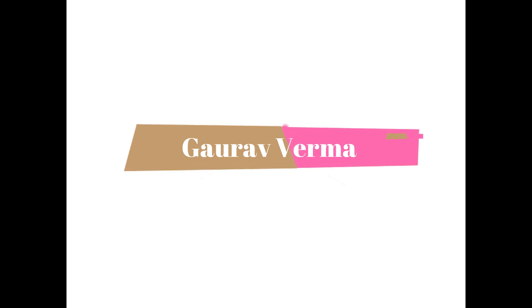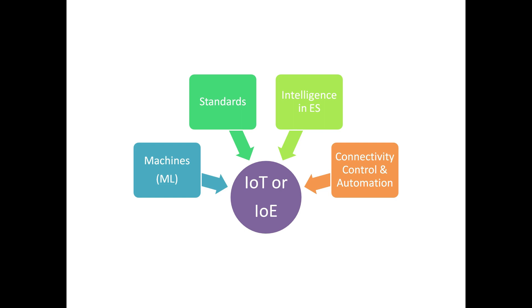Hello everyone, today we are going to discuss about Internet of Things. The Internet of Things is an integration of machines which includes machine learning, that explains how we can train a machine to learn from the input we provide to it. For example, if there is a system and we are providing it some data from the sensors, then how can that system learn what data is being provided to it, and how to analyze it and react to it.